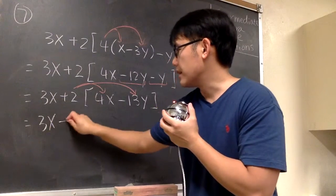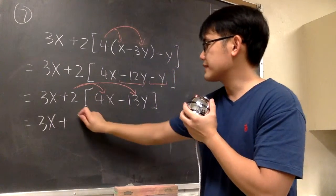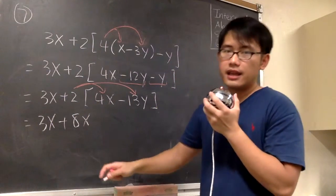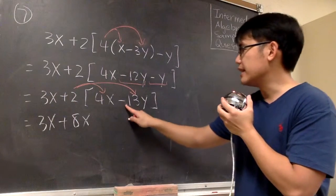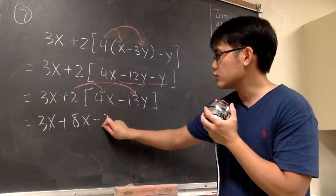3x plus 2 times 4x, that's 8x. And then we have 2 times negative 13y, that's minus 26y.